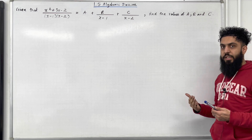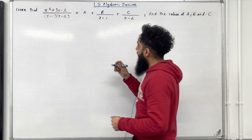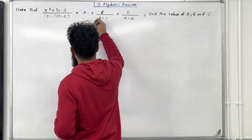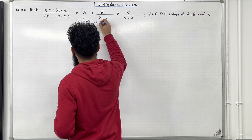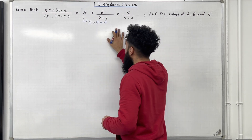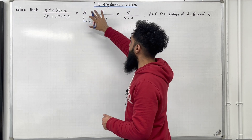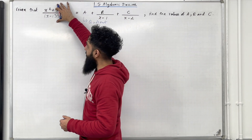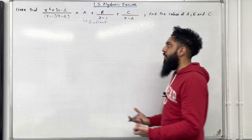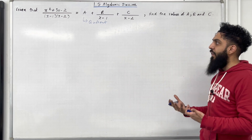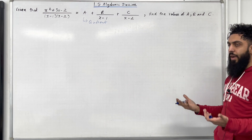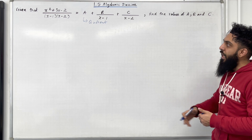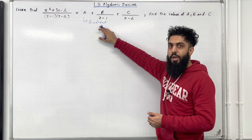Now the critical part of this question is the a. That a is a constant — it represents the quotient. Whenever you have a quotient within a question, that indicates that the given fraction must be an improper fraction, or top-heavy fraction. So when we have a scenario like that we must apply polynomial division in order to work out the quotient.